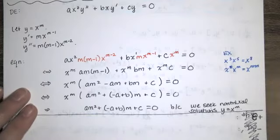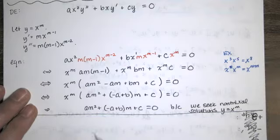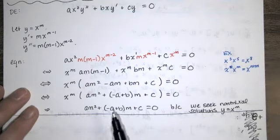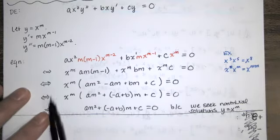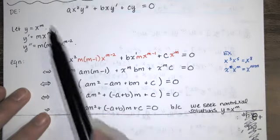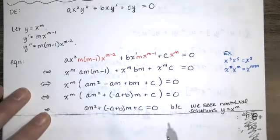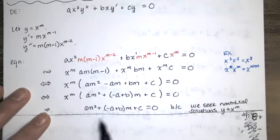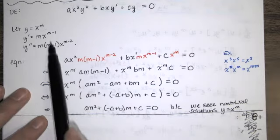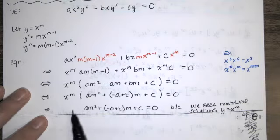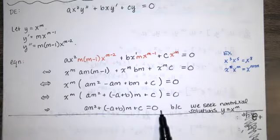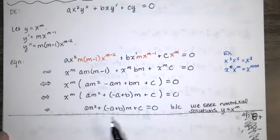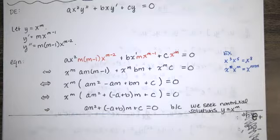This is similar to the method for constant-coefficient equations, where letting y equal e to the mx produced a characteristic equation. The same thing happens here, but the characteristic equation is a·m² plus (b minus a)·m plus c equals 0, rather than simply a·m² plus b·m plus c. Since it's a quadratic in m, there are three cases for the form of the solutions, just as with constant-coefficient equations.